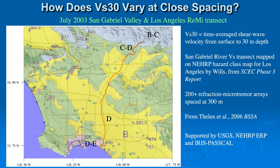We start with a 60-kilometer-long series of 200 surface wave measurements of shear velocity down to depths of about 100 meters, but we're going to look just at the time-average shear wave velocity from the surface to 30 meters depth first — I'll call that VS-30. This is the July 2003 San Gabriel Valley in Los Angeles refraction microtremor transect, consisting of 200 or more refraction microtremor arrays spaced at 300 meters.